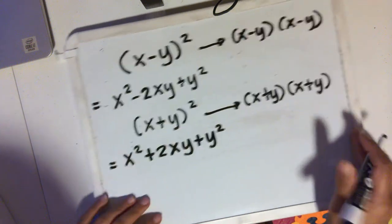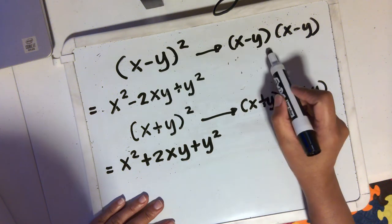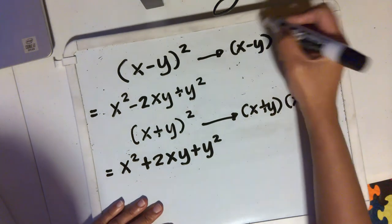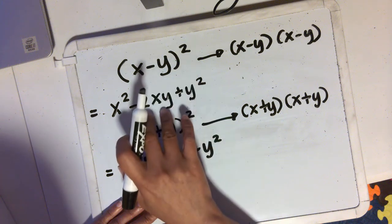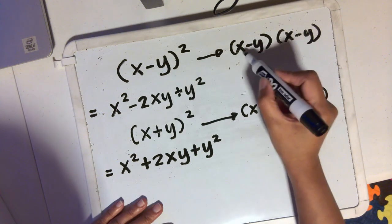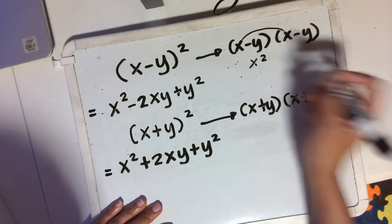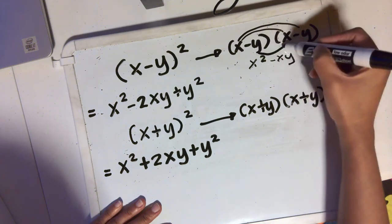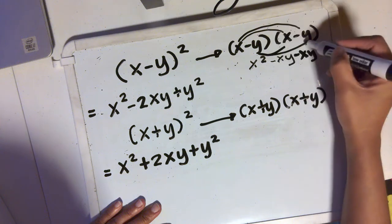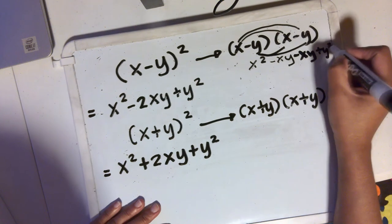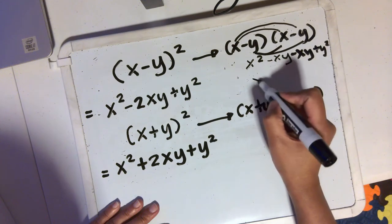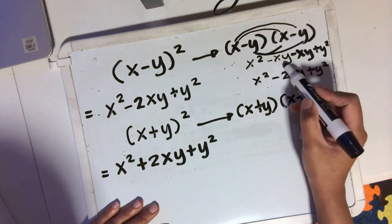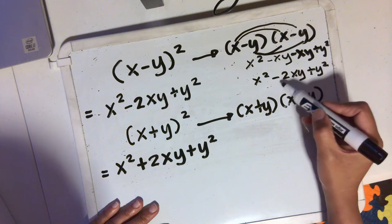Is this true? If x minus y squared is the same as x minus y times x minus y, and this is binomial times binomial, that should mean that if I apply the FOIL method, I should get the same answer. Let's see. x times x is x squared. x times negative y is negative xy. Negative y times x is negative xy. Negative y times negative y is positive y squared. Combining like terms, I will have x squared minus 2xy plus y squared, because negative xy combined with negative xy gives you negative 2xy.